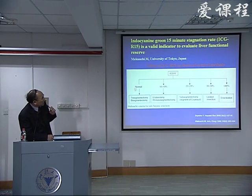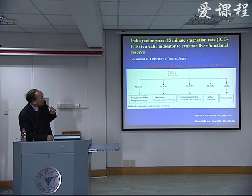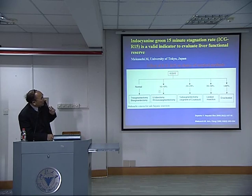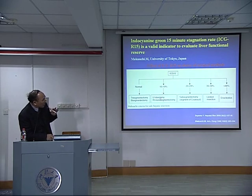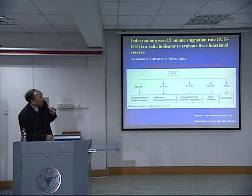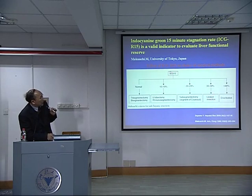If ICG R15 is normal, we can do a segmentectomy or even a larger resection. If ICG R15 is 10–19%, we can only do a limited or small resection. If ICG is high, usually we do only a segmentectomy or limited resection. I think ICG R15 is very, very useful for guiding the extent of liver resection.